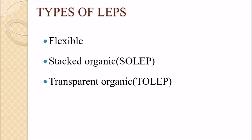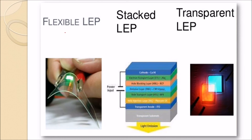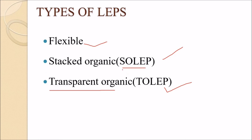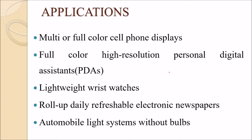There are various types of LEPs. The first is flexible LEP, which is highly flexible as can be seen visually. Then there is stacked organic LEP, also called SOLEP, with different stacking configurations showing how power input produces light output. Finally, there is transparent organic LEP, also called TOLEP, which exhibits visible transparency.